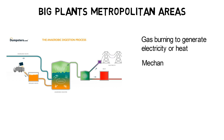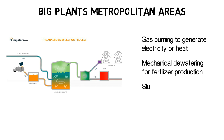Additionally, mechanical dewatering might be used to produce fertilizers or to prepare the sludge cake for incineration, where it generates more electricity.